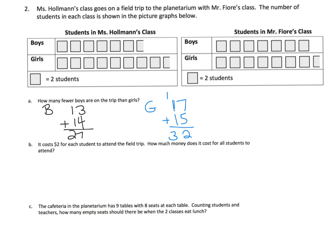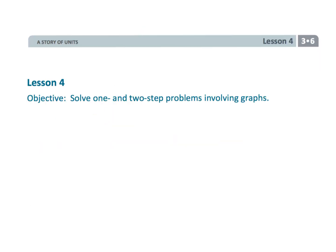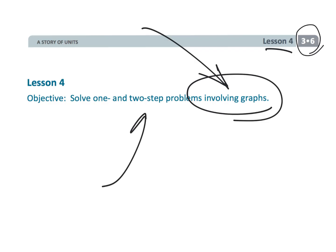With 27 boys and 32 girls, to go from 27 to 32 is 5 — so there are 5 fewer boys than girls. I'll leave the rest of the questions for you to solve on your own. The key is knowing how to read this table: each block represents two students, and a half block represents only one student. That wraps up third grade module 6, lesson 4 — students are creating graphs and using those graphs to solve problems.